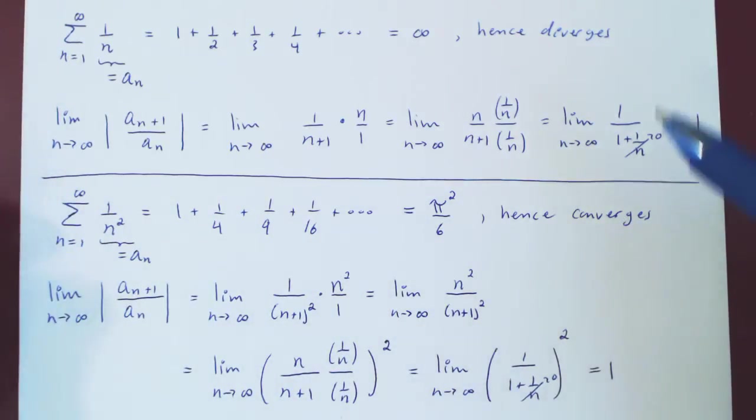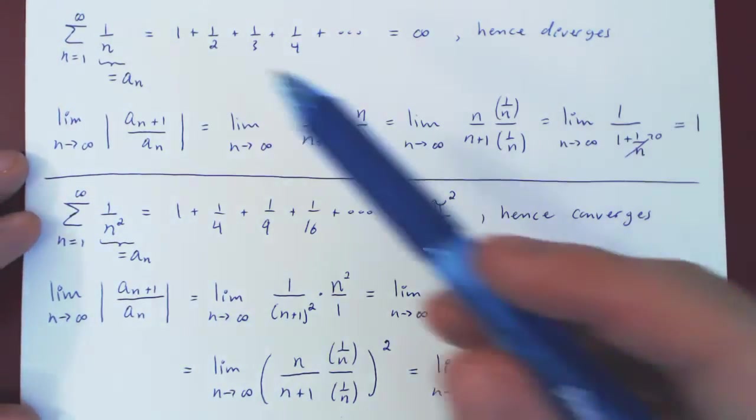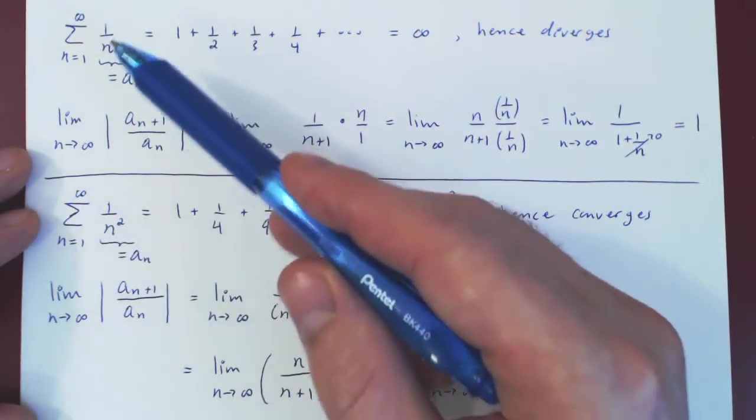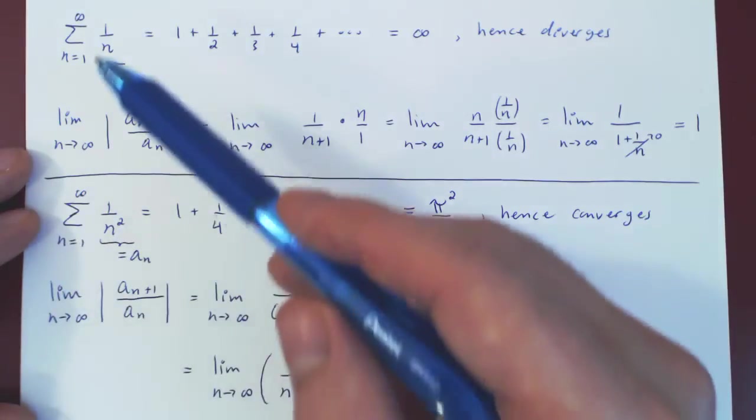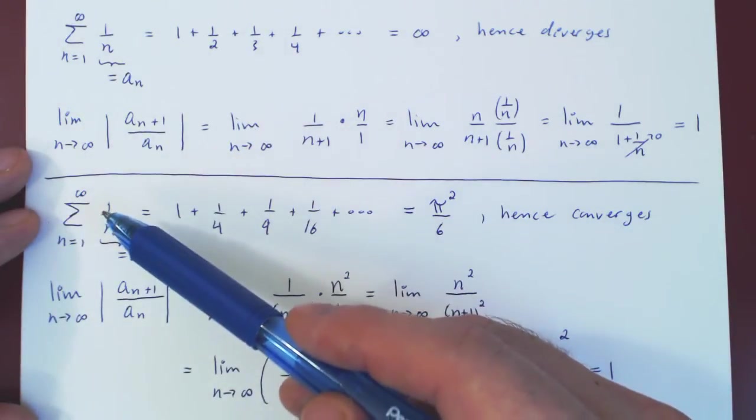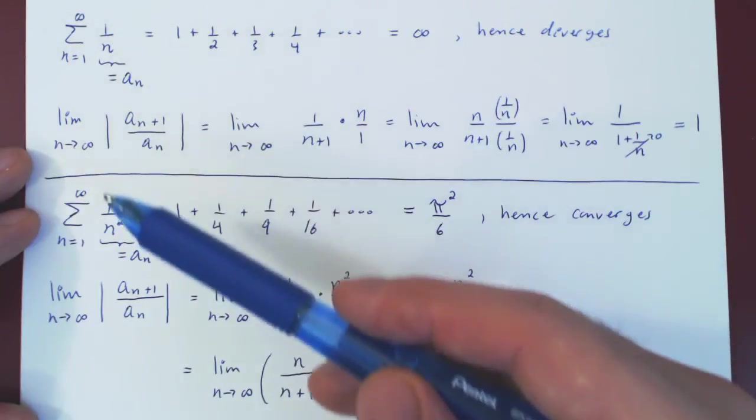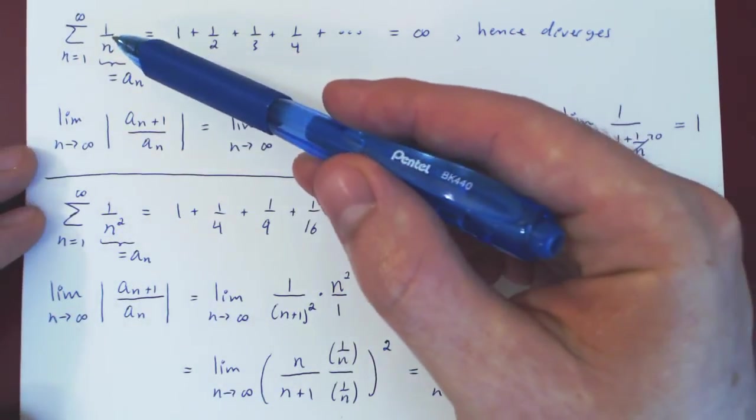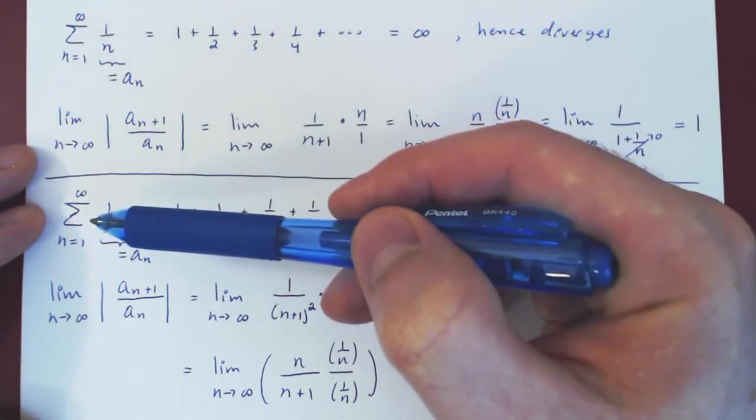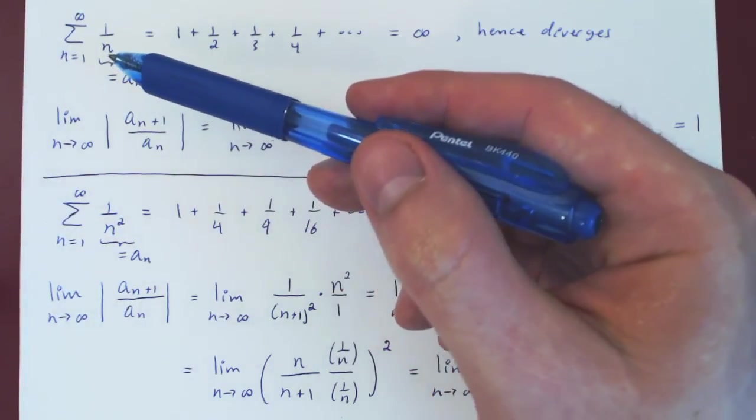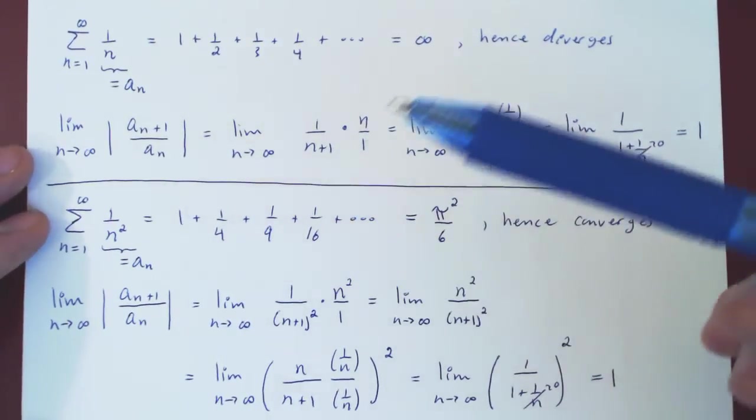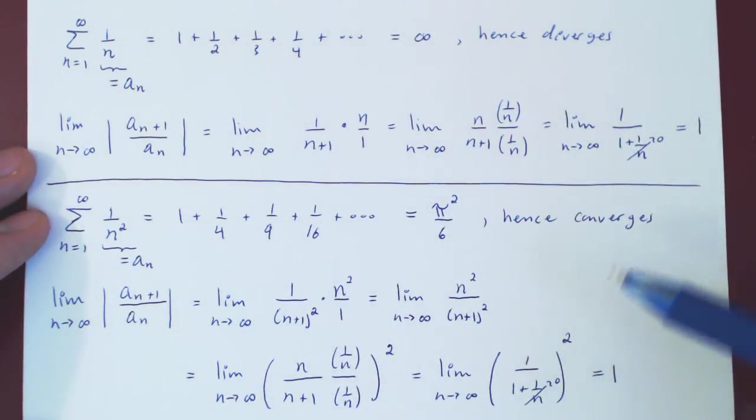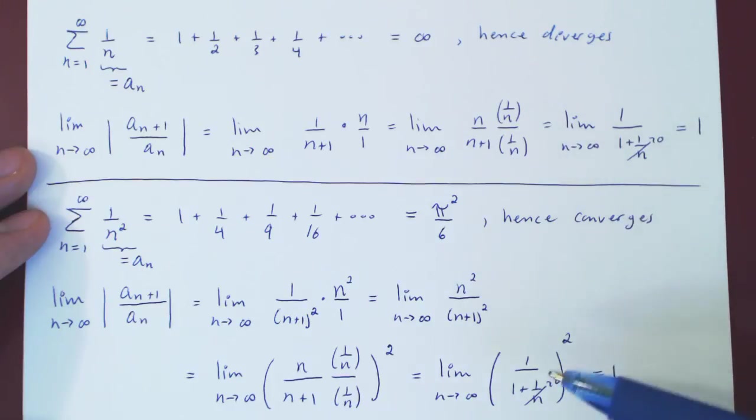And that's it. The key point is that we should have known ahead of time that the ratio test was going to fail in both cases, because there was no exponential function, there was no factorial, and there was no n to the n term. This will always happen if you try and apply the ratio test where you don't have an exponential or a factorial or an n to the n. The limit will be 1 and the test will simply fail.